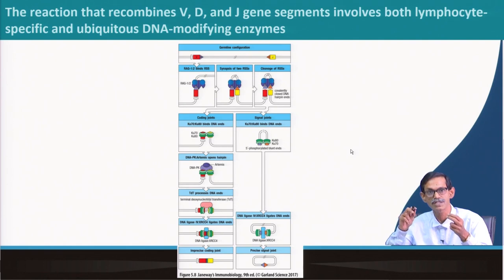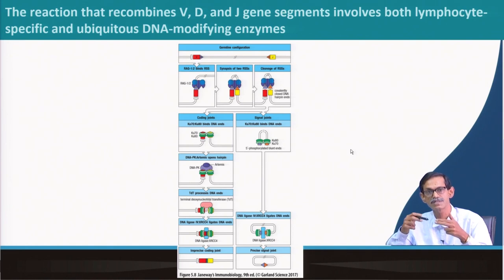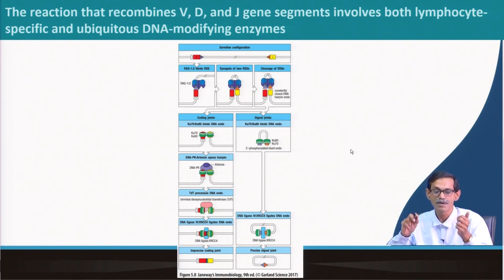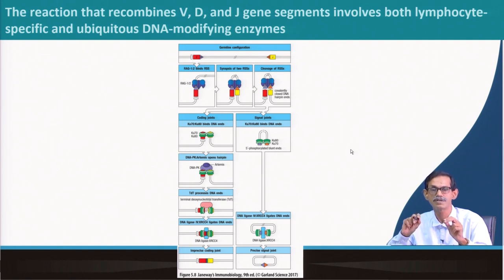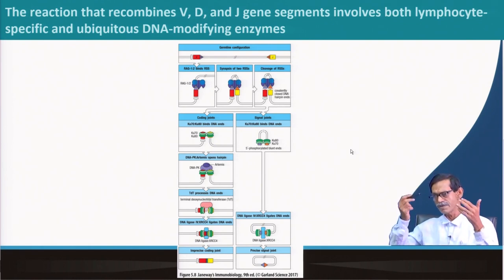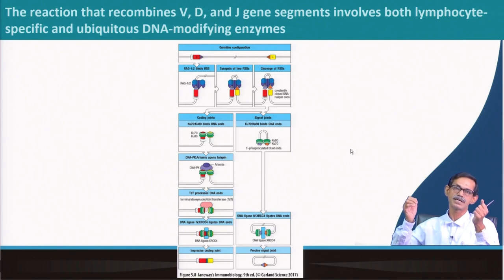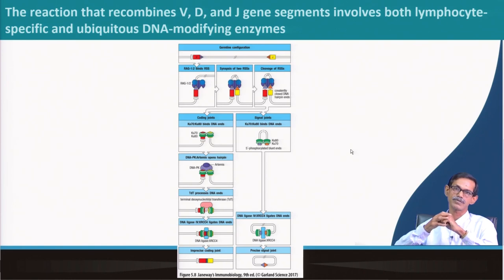Not only are these proteins lymphocyte-specific, they are also not expressed all the time in the lymphocyte. As I told in the previous class, as soon as recombination is done, many proteins will switch off forever so that no further recombination happens. But some proteins are ubiquitous DNA-modifying enzymes.